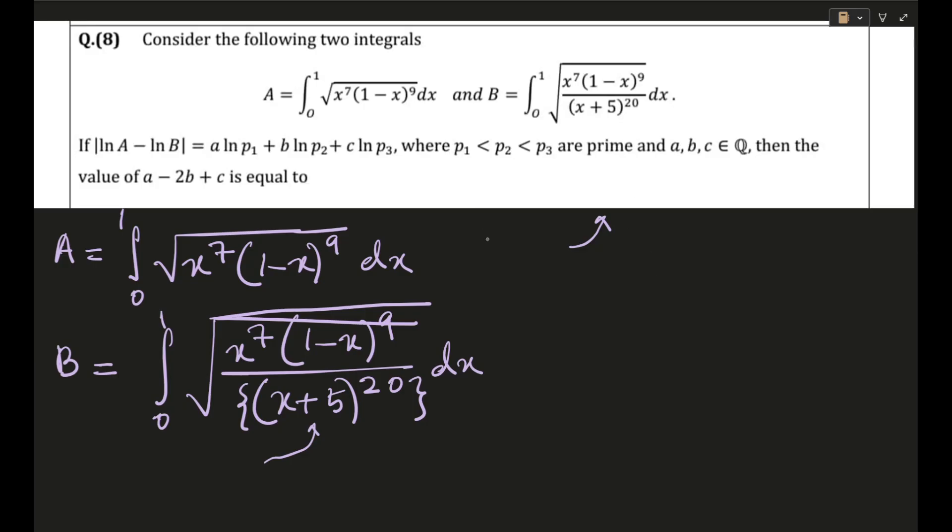Okay because powers we will regulate later on but let's restrict our thinking right now to x+5. So I can actually refine these integrals a little bit. I can write them as integral 0 to 1 of x^(7/2) into (1-x)^(9/2) dx.